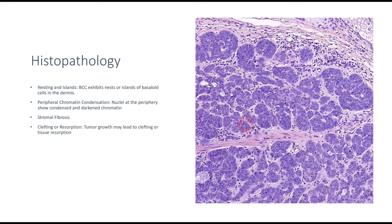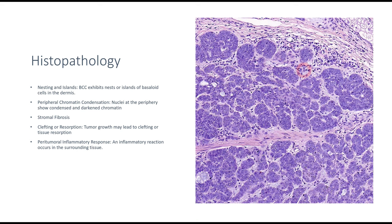At times you can also appreciate clefting and tissue reabsorption — for example, in a basal cell carcinoma invading adjacent structures, there may be tissue reabsorption as well. Since there is inflammation and bleeding occurring, you can appreciate different inflammatory cells invading the tumor, leading to a peritumoral inflammatory response.